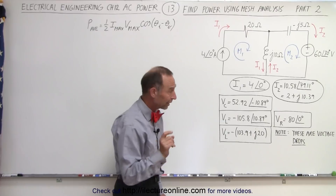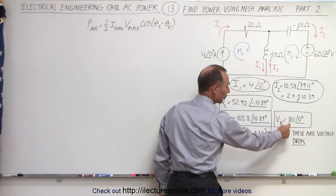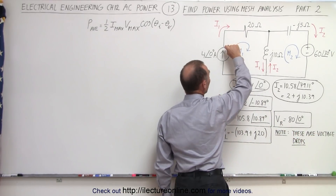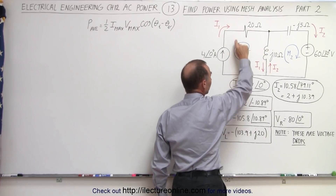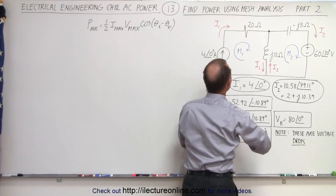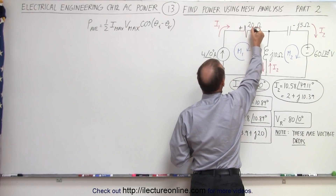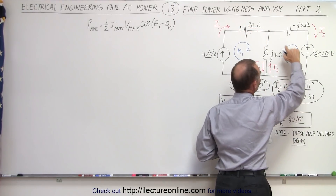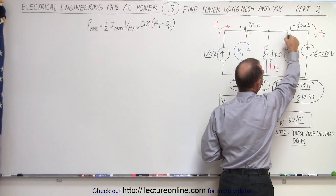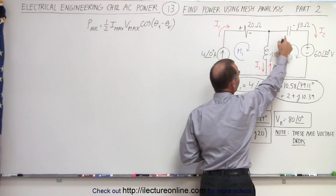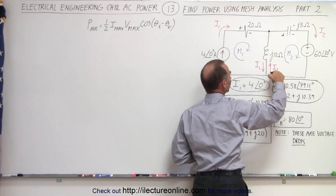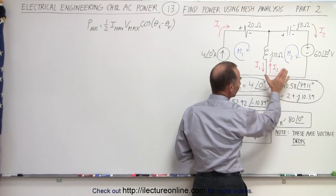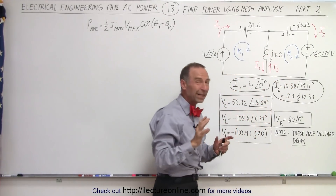Now we need to note that these voltages are actually voltage drops. This is the voltage drop across the resistor going around the mesh in the direction indicated here — that's a voltage drop, from plus to minus. Based upon the direction of I2, that would be a voltage drop across the capacitor going from left to right, from plus to minus. And this would be a voltage drop relative to I2. As far as the inductor is concerned, we need to be a little bit careful.